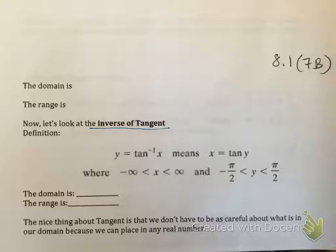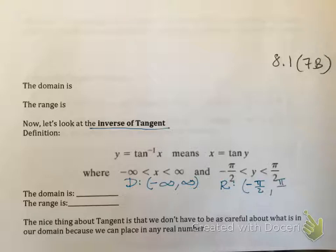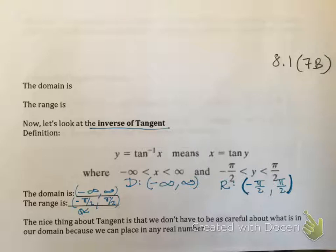For inverse tangent: the domain — we saw that the range for the restricted tangent graph was negative infinity to positive infinity, and that is now our domain. The range for inverse tangent is from negative pi over 2 to pi over 2, not including those two values because those are where the vertical asymptotes are. So the domain is negative infinity to positive infinity, and the range is negative pi over 2 to pi over 2. If you get a negative value, your angle goes in quadrant 4; if positive, quadrant 1.